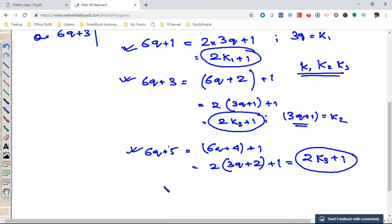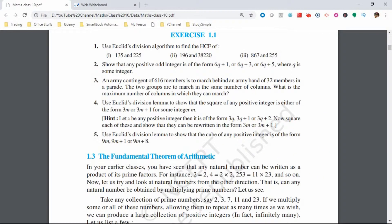Since 2k plus 1 is never exactly divisible by 2, hence the expressions 6q+1, 6q+3, and 6q+5 become the positive odd integers. Now without wasting much time, we will dive straight into question number 3.